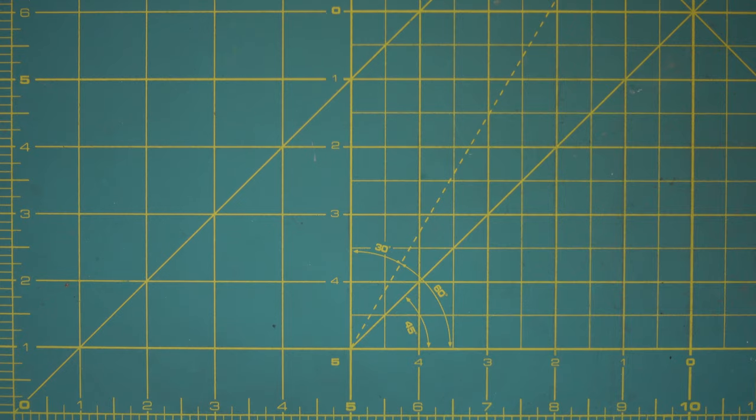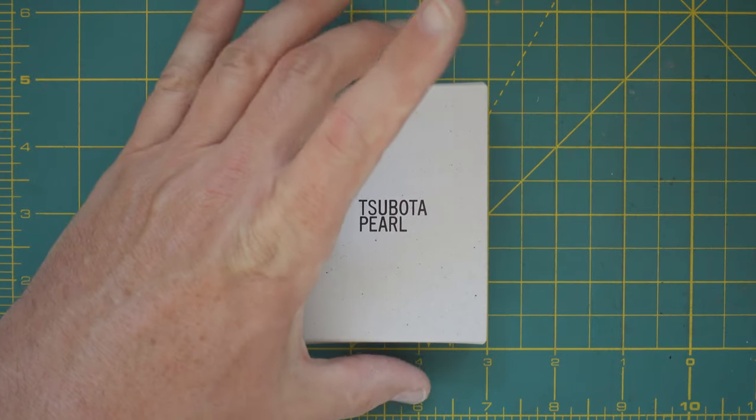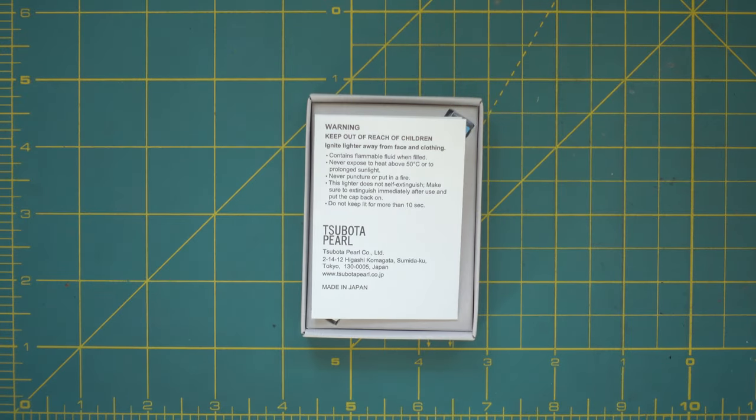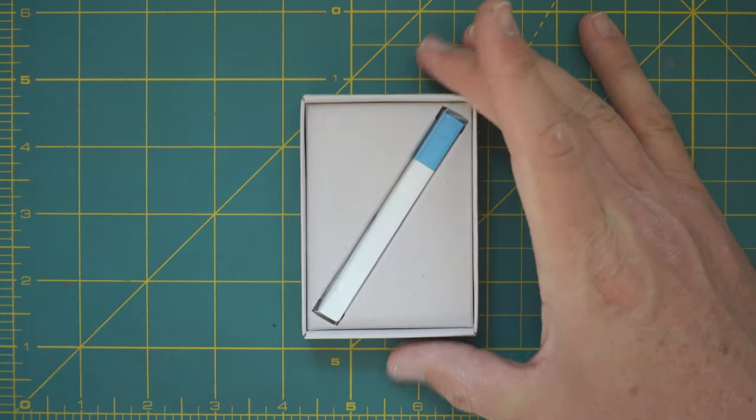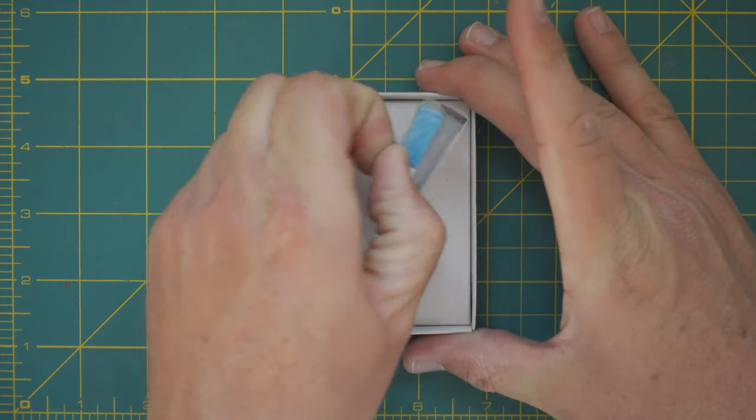This is my review of the Tsubota Pearl Q lighter. This is a nice minimalist lighter and when I first saw them I really liked the design. It's just a simple square stick.